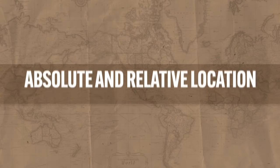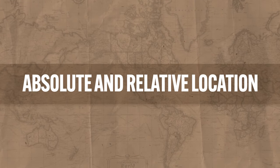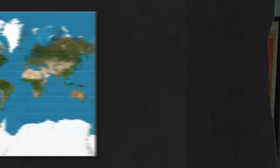First is absolute and relative location. Absolute location indicates a precise geographical location on the Earth's surface. To understand how it's calculated, you need to know about two other terms: latitude and longitude.